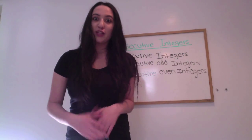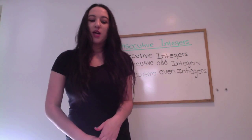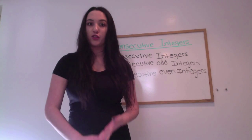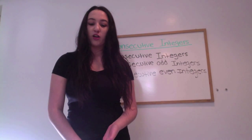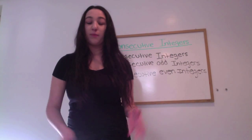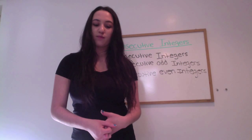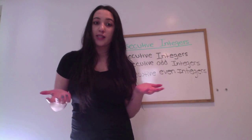What is a consecutive integer? Consecutive integers are integers that follow one another in order. They start by any integer and count by one. Here's an example: one, two, three, four.